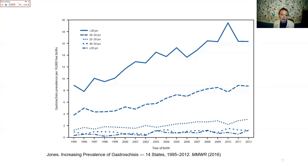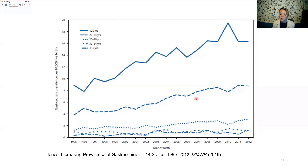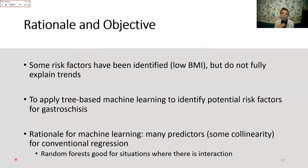Here I'm showing CDC data collected between 1995 and 2012. Each line represents a different maternal age group. The top solid blue line represents mothers under 20 years old. We see a stark increase in gastroschisis prevalence among younger mothers over this period, with mothers aged 20–24 showing a less sharp increase, and much less increase among older mothers in the U.S.